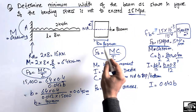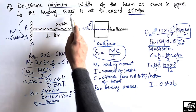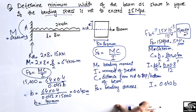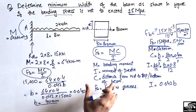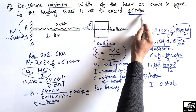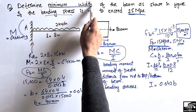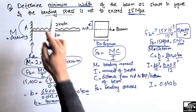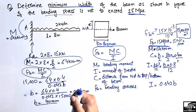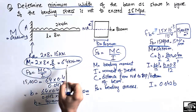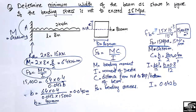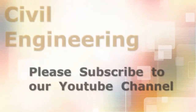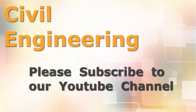So 40 mm is the minimum width of the beam for which the bending stresses will not exceed 15 megapascal. This is how to find an unknown dimension of the beam when the allowable bending stress is given. It should be kept in mind that finding the minimum width refers to using the maximum bending moment of the beam. Hope you guys understand — don't forget to subscribe to our channel. Thank you for watching. We'll see you next time.